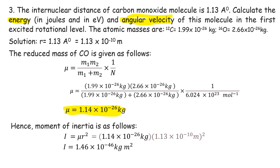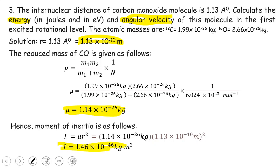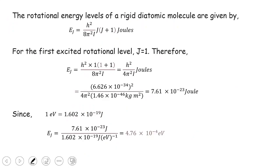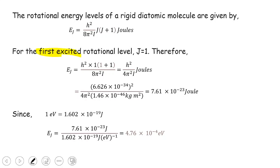Now calculate the moment of inertia: I = μr² = 1.14×10⁻²⁶ × (1.13×10⁻¹⁰)² = 1.46×10⁻⁴⁶ kg·m². Now for the energy, the rotational energy levels of a rigid diatomic molecule are given by E_J = h²/(8π²I) · J(J+1). For the first excited rotational level, J = 1, so we substitute into the equation.